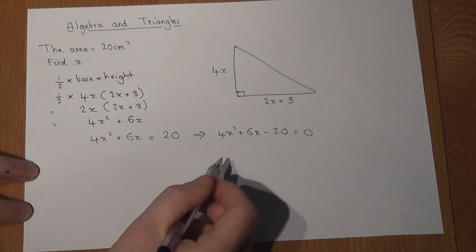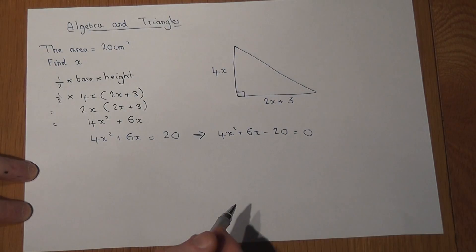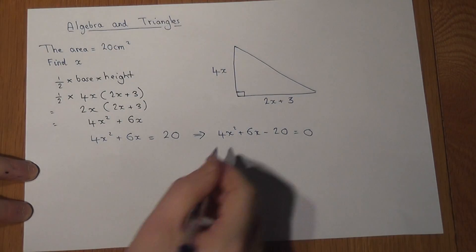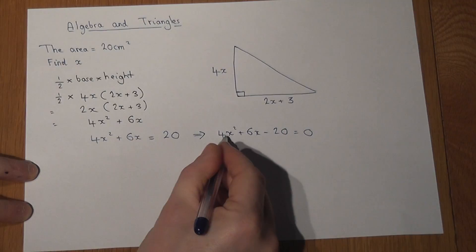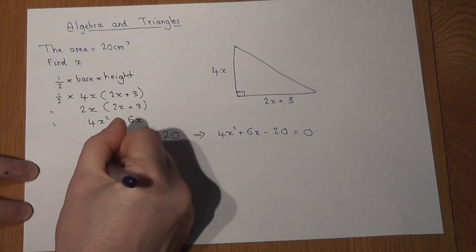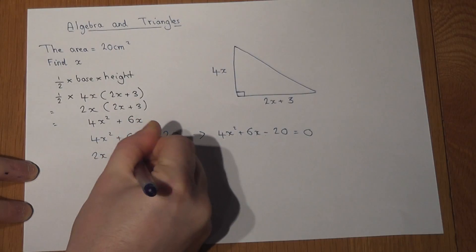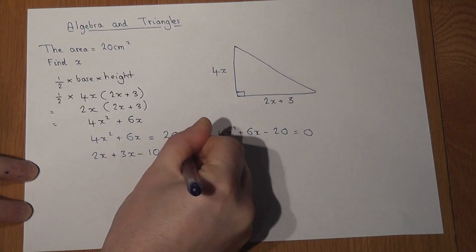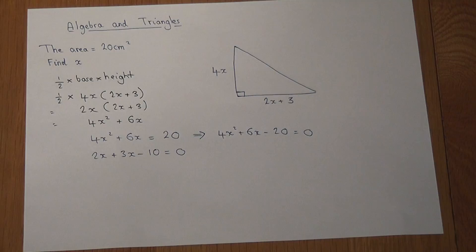And I can make it simpler if I divide by 2 to get the numbers lower. If I divide by 2, I get 2x squared plus 3x take away 10. So 2x squared plus 3x take away 10 equals 0. This is now an x squared equation to solve.